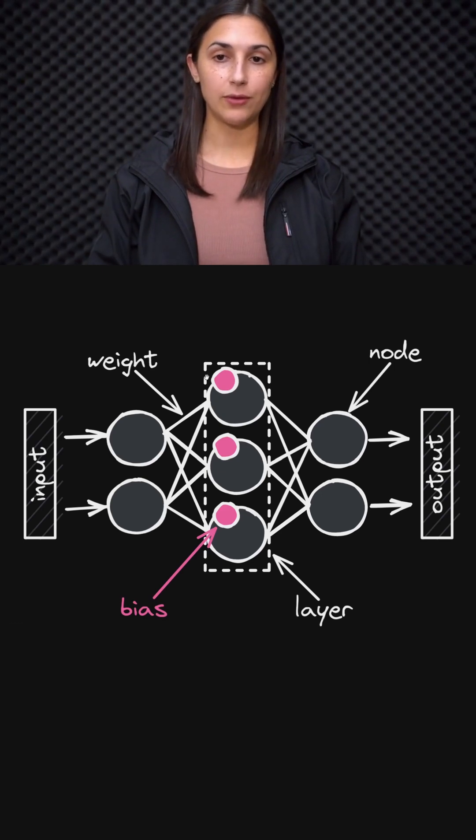So we know that this group of nodes here, for example, is considered a layer and that the layer is made up of these nodes, which are connected to other layers via weights.